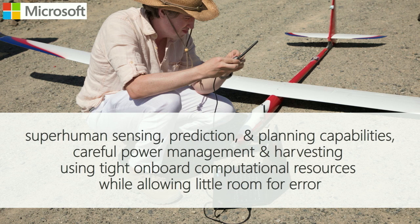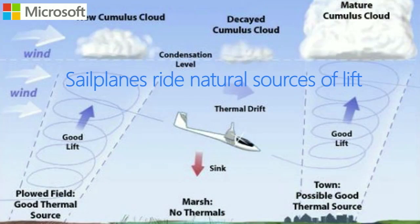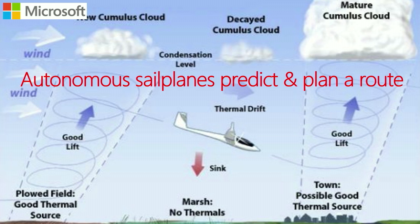What does that require? It requires that you can sense and predict and plan a route, and then of course manage mechanics, power management, and computational resources, while really reducing uncertainty as you design the system. Sailplanes actually just ride natural sources of lift. Depending on the ground — whether you're over a plowed field, the desert, a marsh, or a town — you're going to create a different kind of lift. The sailplane either flies or sinks based on naturally occurring heat in the air, which is also affected by wind and cloud coverage. So we asked: could we get a plane to find these thermal drifts and plan a route to fly between them?